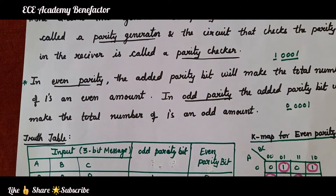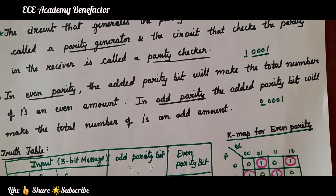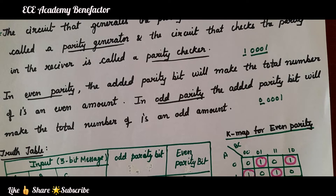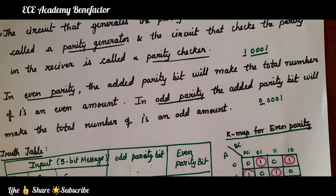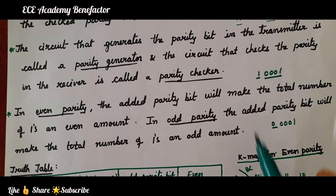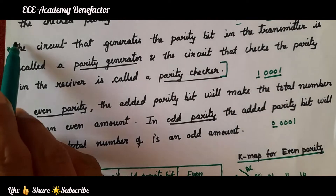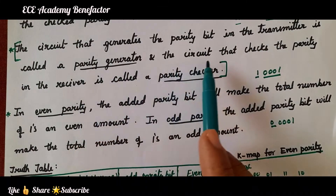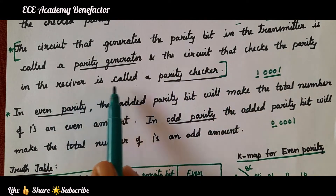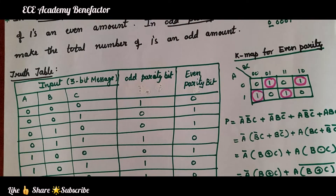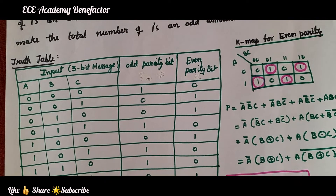To summarize: a parity bit is an extra bit added along with the binary message for detecting errors during transmission. At the transmitter we have a parity generator, and at the receiver we have a parity checker. Now let us see how to design an even parity bit generator.